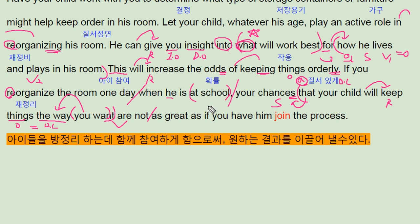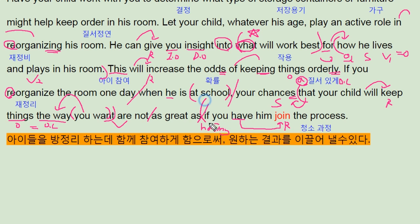are not as great as — 그만큼 좋지 않다는 뜻이죠. 그러면 if you have 또 사역동사 동사원형이에요. 만약에 네가 아이가 참가하게 — 그 과정이란 말은 무슨 뜻으로 해석해야 돼요 여기서는 — 청소 과정, 청소 과정에 직접 참여하게 될 확률만큼 좋지는 않다. the way you want as great as having — 분사 구조로 써버리는 게 훨씬 더 자연스러운데, if you have를 지금 억지로 좀 나눠버렸어요. 네가 아이와 함께 할 확률보다 적다. Having him join the process가 더 자연스러운 문장입니다 사실상.